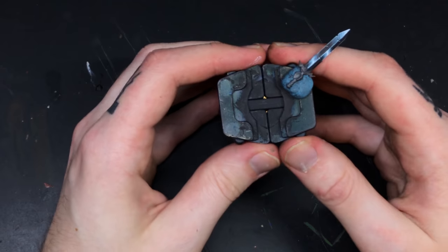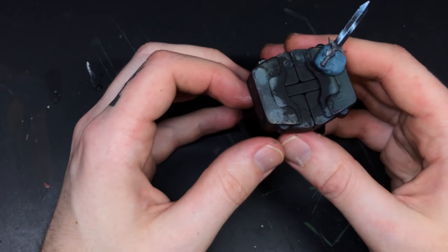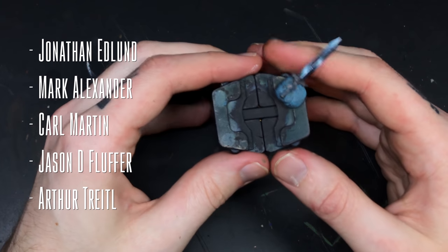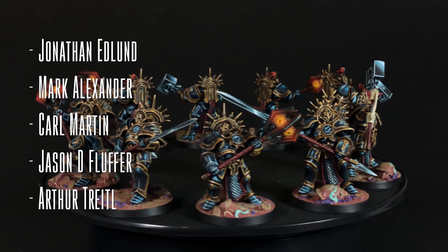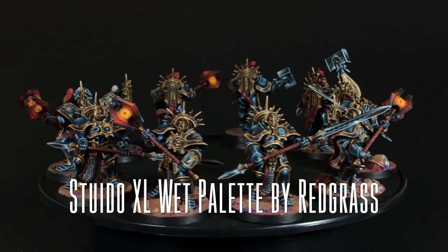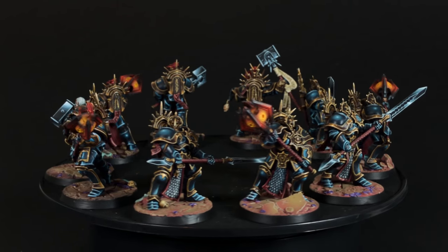This amazing editing was done by Martin Kramer. Funding for this tutorial comes from Jonathan Edlund, Mark Alexander, Karl Martin, Jason D. Fluffer, and Arthur Trettle. The palette I used here was a Studio XL wet palette by Redgrass. I am Oscar Lars. See you next time.